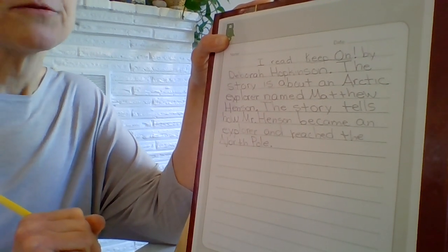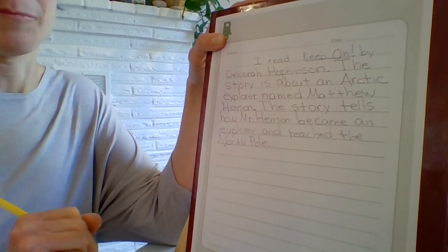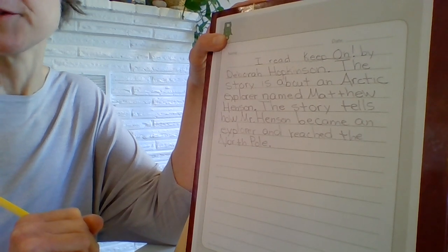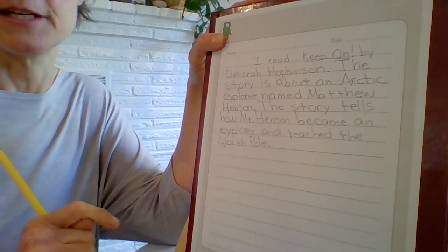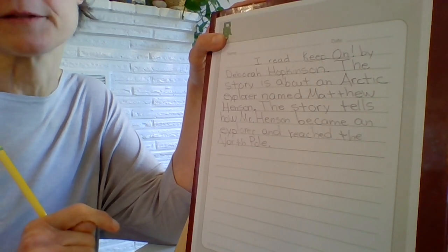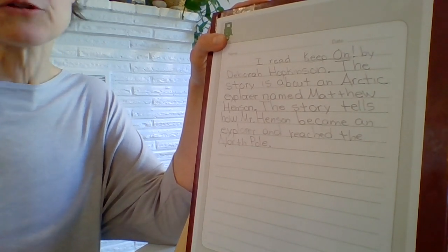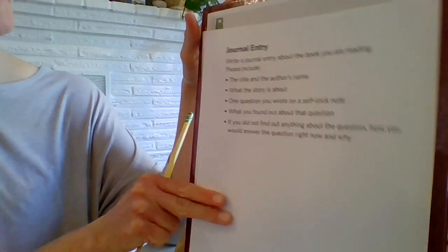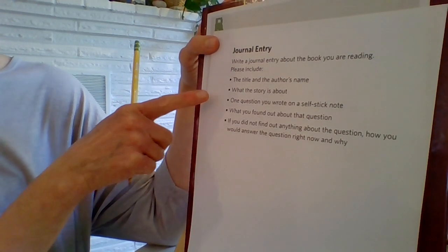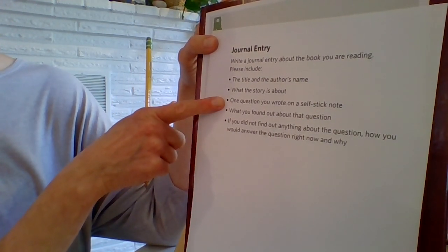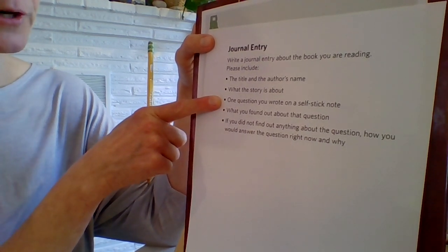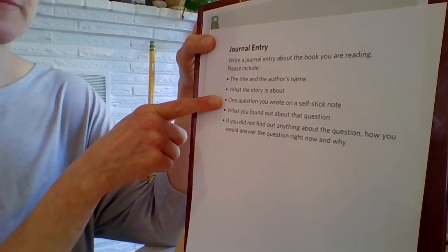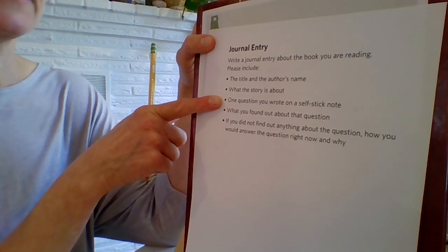Did you notice that because several things happened in the story, I needed to make sure I used more than one sentence to explain what happened? Let's look at the third direction together. The third direction says we need to include one question you wrote on a self-stick note, and that might also be on scratch paper, or you may have written on your asking questions page in your packet.